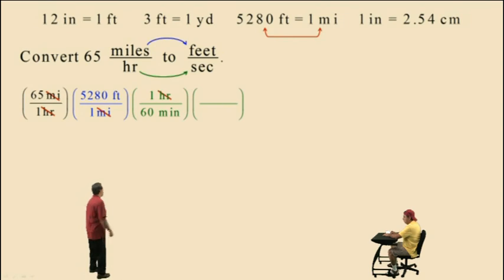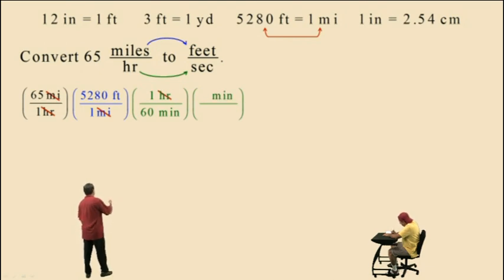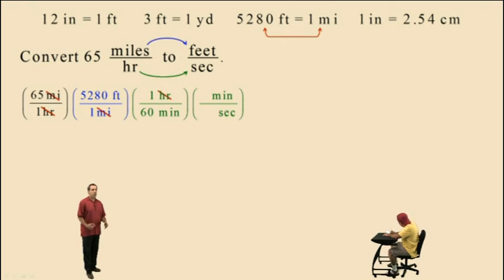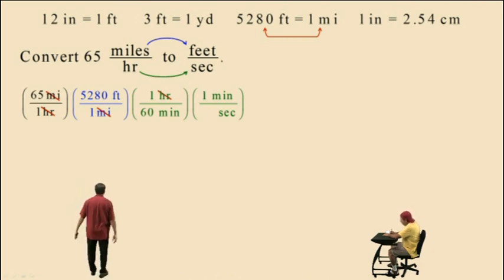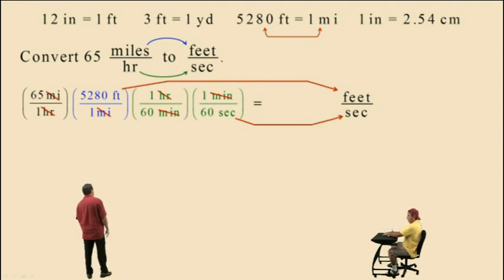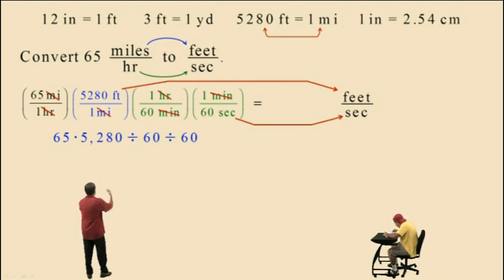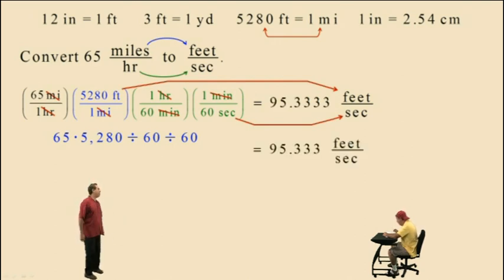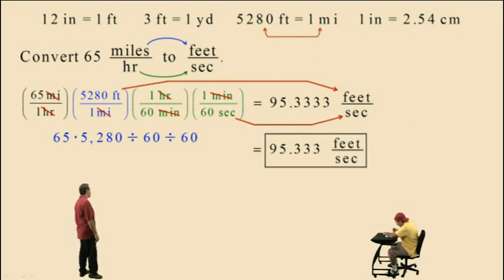But we want feet per second, so we have to convert those minutes to seconds with one more conversion factor. Notice we put minutes on the top because we need those minutes to cancel. We put seconds on the bottom. There are 60 seconds in one minute, so our conversion factor requires the ratio of minutes to seconds, which is 1 to 60. Finally, minutes cancel out. We're left with units of feet on top and units of seconds on the bottom — that's what we wanted. We take 65 times 5,280 divided by 60 divided by 60, which gives 95.3333. Rounded to the nearest one-thousandths: 95 and 333 one-thousandths feet per second.